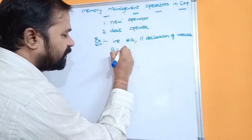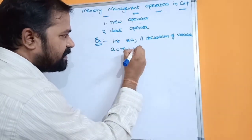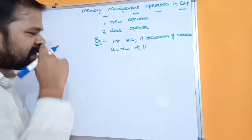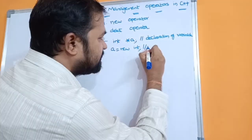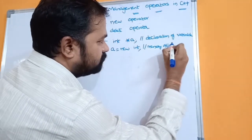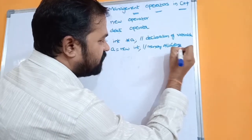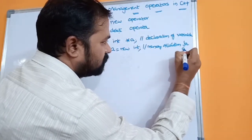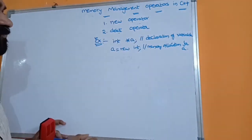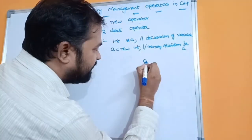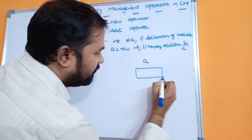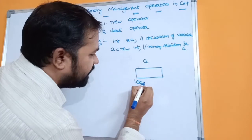Next, a = new int. With the help of the new operator, we are allocating memory for a. Whenever the first statement is executed, some memory will be allocated for a. New operator allocates memory for the variable and it returns a pointer to the starting address of a.